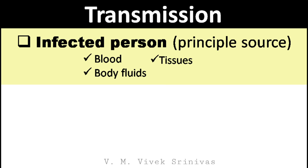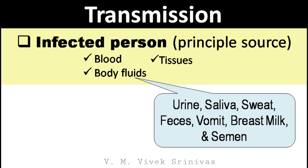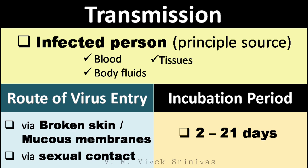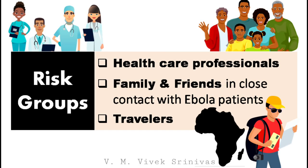Transmission: the blood, infected tissues, and body fluids such as urine, saliva, sweat, feces, vomit, breast milk, and semen from an infected human or apes act as the principal source of this virus. The portal of entry is through broken skin or mucous membranes, and through sexual contact. The incubation period ranges from 2 to 21 days from the entry of the virus, depending on the immune status of the individual. Risk groups for this infection include healthcare professionals such as doctors, nurses, and other workers; family and friends in close contact with Ebola patients; and travelers visiting endemic areas.